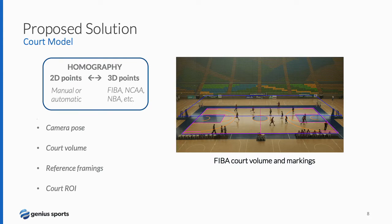The first block of our system is the court model. The court modeling is done once, assuming that the camera is fixed. The idea is to localize the court and also to estimate the camera pose. We manually or automatically detect the location of some points in the image corresponding to the corners of the field or the corners of the key areas, and we find a homography that maps these points to the 3D layout of the field depending on FIBA, NCAA, or NBA type of court. Using this homography, we estimate the camera pose and also a 4-meter height volume of the court, which is useful for computing reference framings such as a zoom-out framing and frames for the left and right half courts. We also use this court localization to create a mask and a region of interest to filter detections.